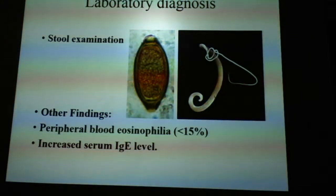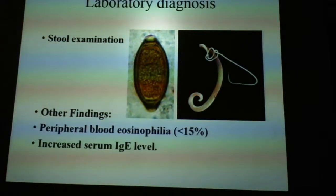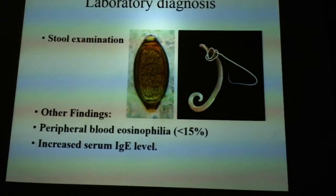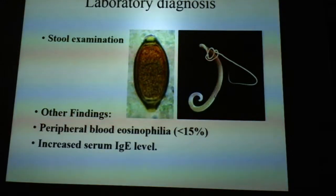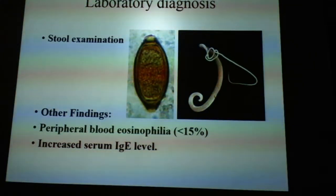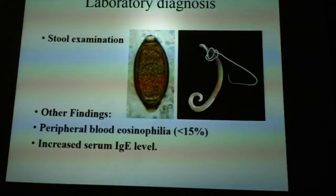For laboratory diagnosis, the eggs are bile-stained — you can see that yellow color — and they can float easily in saturated salt solution. We can also detect the presence of worms in the large intestine. There are techniques where we make the person swallow a capsule that attaches to the end of the worm; when they excrete through stools, we can see the worm. Other findings include peripheral blood eosinophilia and increased serum IgE level.